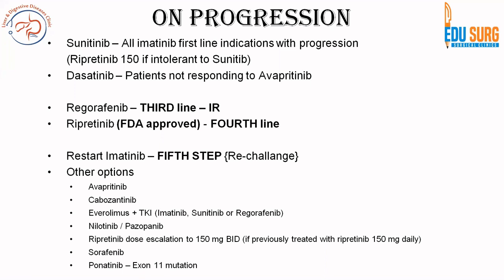As a fifth step, if the patient still progresses further, you can restart imatinib as a re-challenge therapy, along with other options based on what the patient has not received prior. You can use avapritinib, cabozantinib, or a combination of everolimus with TKI, nilotinib, pazopanib. You can increase the dose of ripretinib to 150 mg twice daily, sorafenib, and for exon 11 mutation, you have ponatinib.